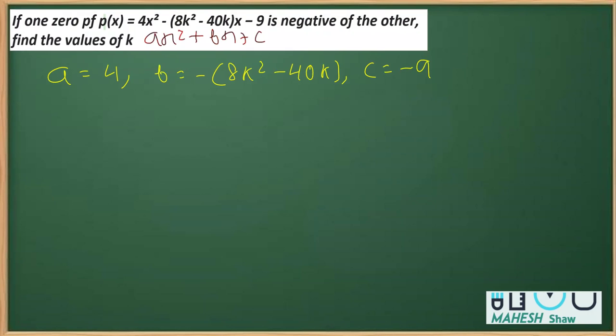Here, b = -(8k² - 40k), and c is the constant term which is -9. So we have a, b, and c. Now, one zero is negative of the other. We take α and β as the zeros, so one zero, say α,